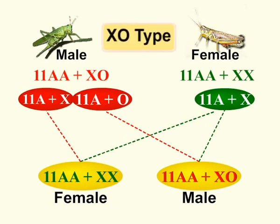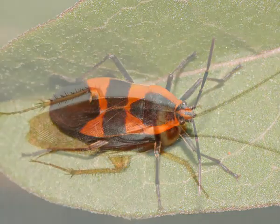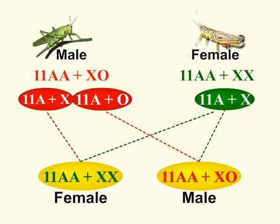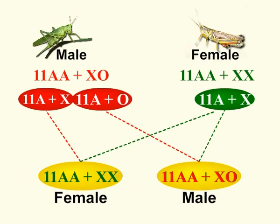This method of sex determination is called the XO type. Besides grasshopper, this method is found in many other insects like bugs and cockroaches. The graphic shows the types of gametes produced by the two sexes of grasshopper. When the male gamete with the X-chromosome fuses with a female gamete, a female offspring is produced. When a male gamete with no sex chromosome fuses with a female gamete, a male offspring is produced.